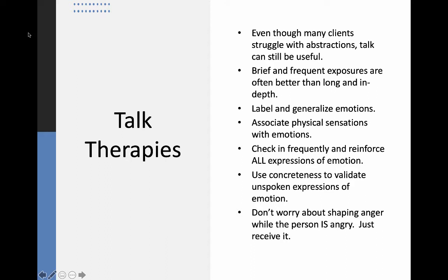Use lots of concreteness to validate unspoken expressions of emotion. When somebody crosses their arms and looks down at the floor, tell them how you receive that. Let them know that you are receiving their messages and help them over time to gradually find ways to put that into words if that's possible. Don't worry about trying to shape work around anger while the person is angry — when people are angry sometimes it's just okay to say 'I understand that' and simply give them space and time. When they're calm later on we can talk about the things they did that worked and the things that didn't work. We don't want to try and teach while people are at their most emotional. This is true for anger, but equally true when people are extremely sad or extremely fearful — we want to take an emotional snapshot and afterwards say 'do you remember when you said this?' and 'how did it work for you?'